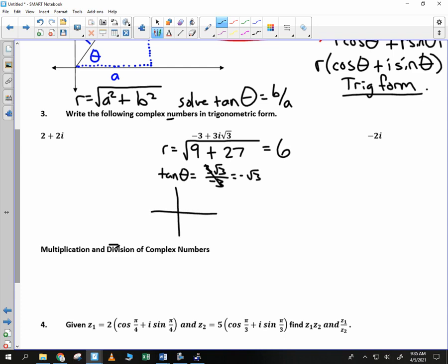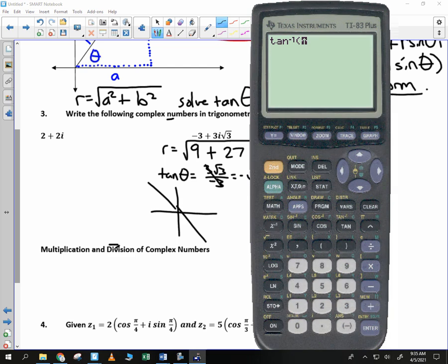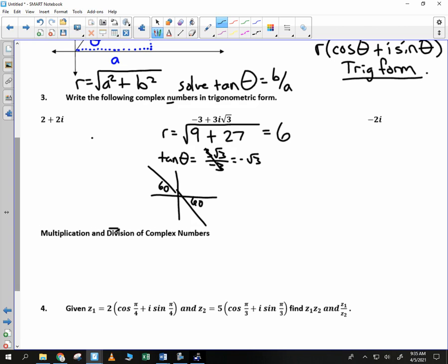Where is tangent negative? Second and fourth. I go to my calculator, and I do tangent inverse of root 3. And as you all know, because you memorized it, we get 60. So I got a 60 here, and a 60 here. Which one am I talking about? The one in the second quadrant or fourth quadrant? How do you know you're talking second quadrant? Because if you were to graph it, you'd end up in the second quadrant.